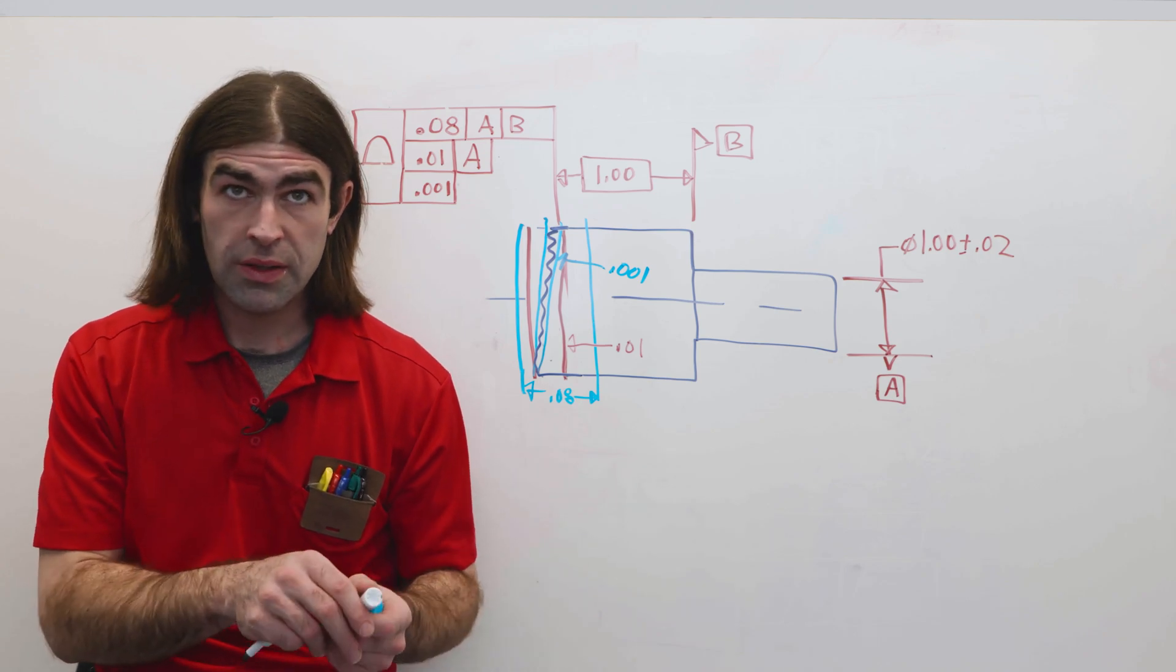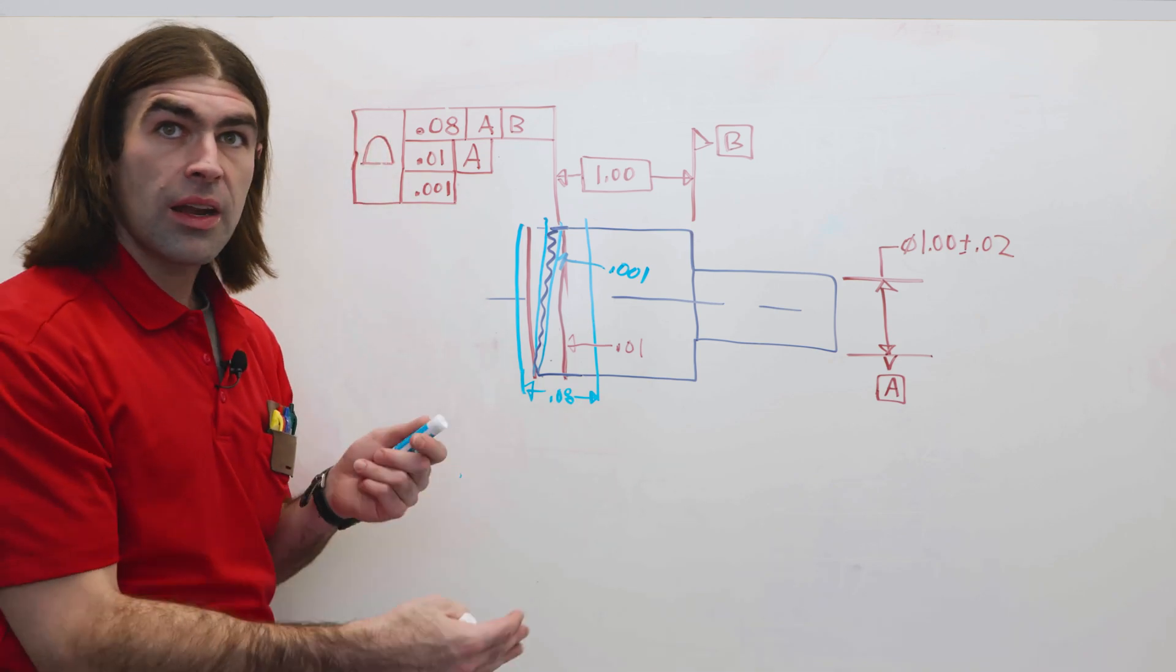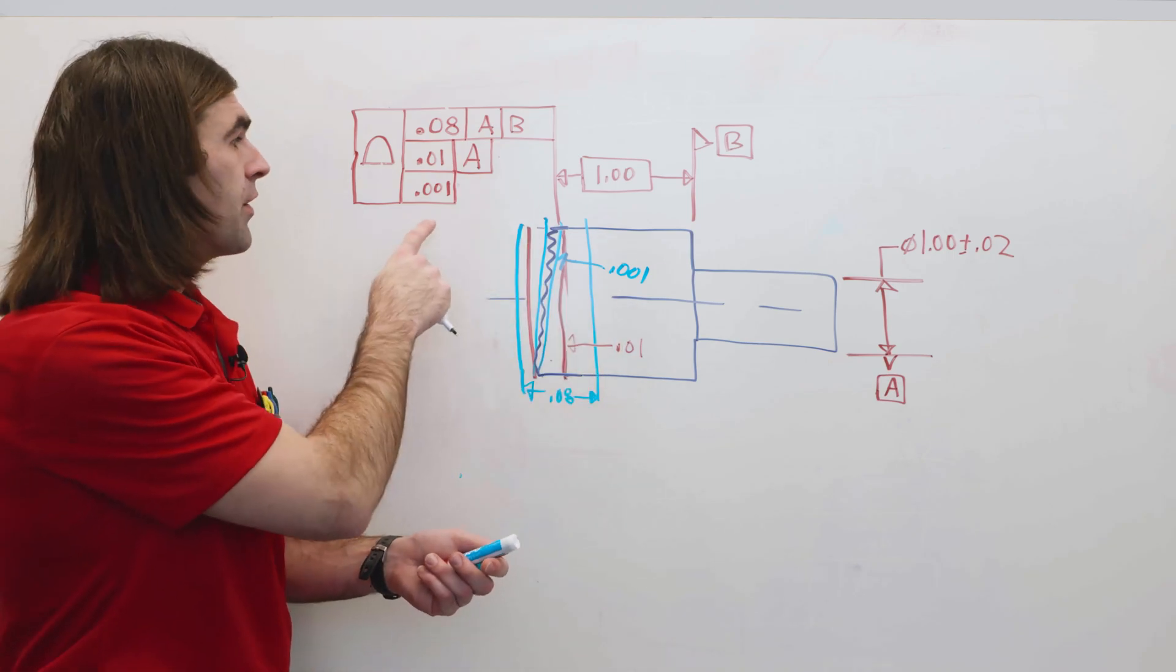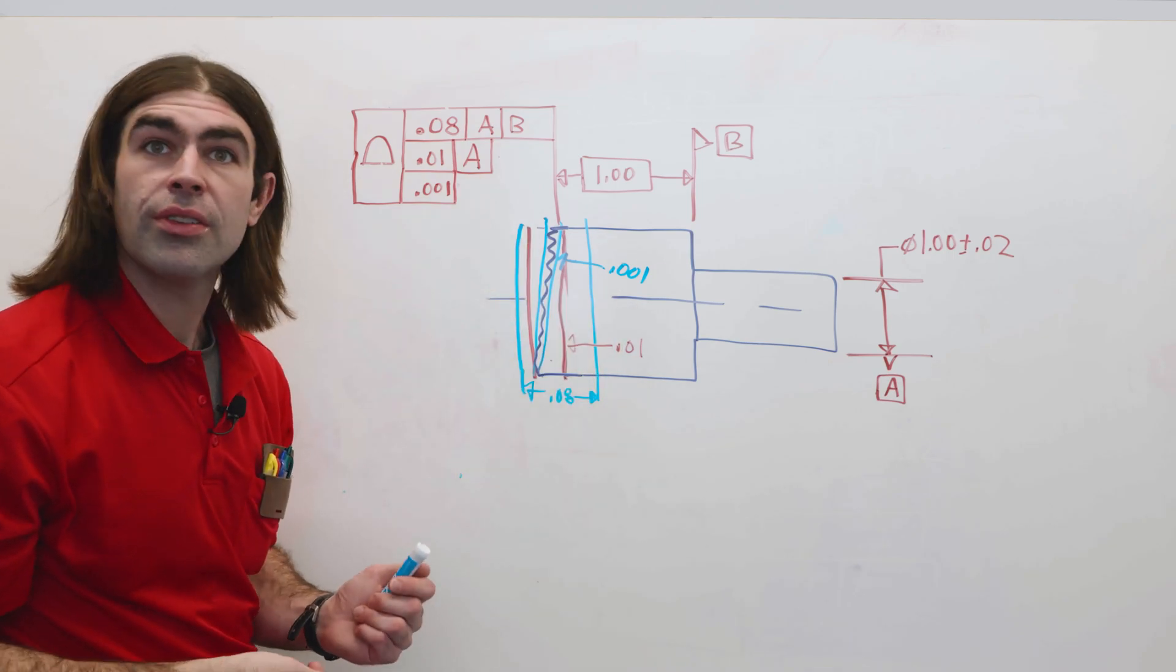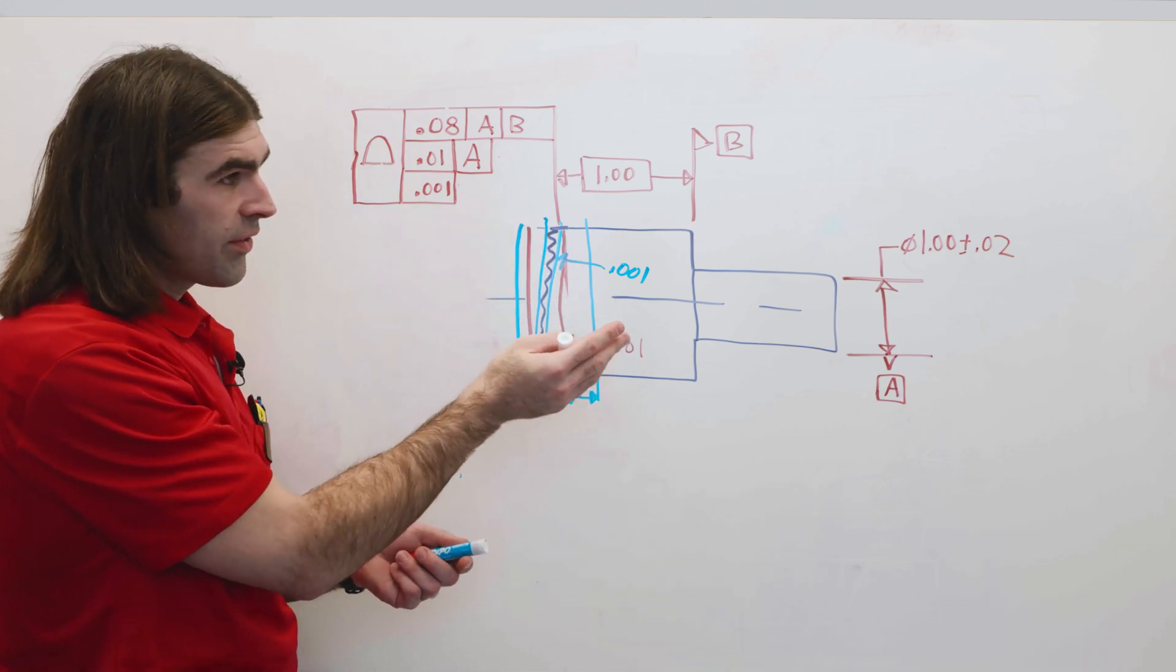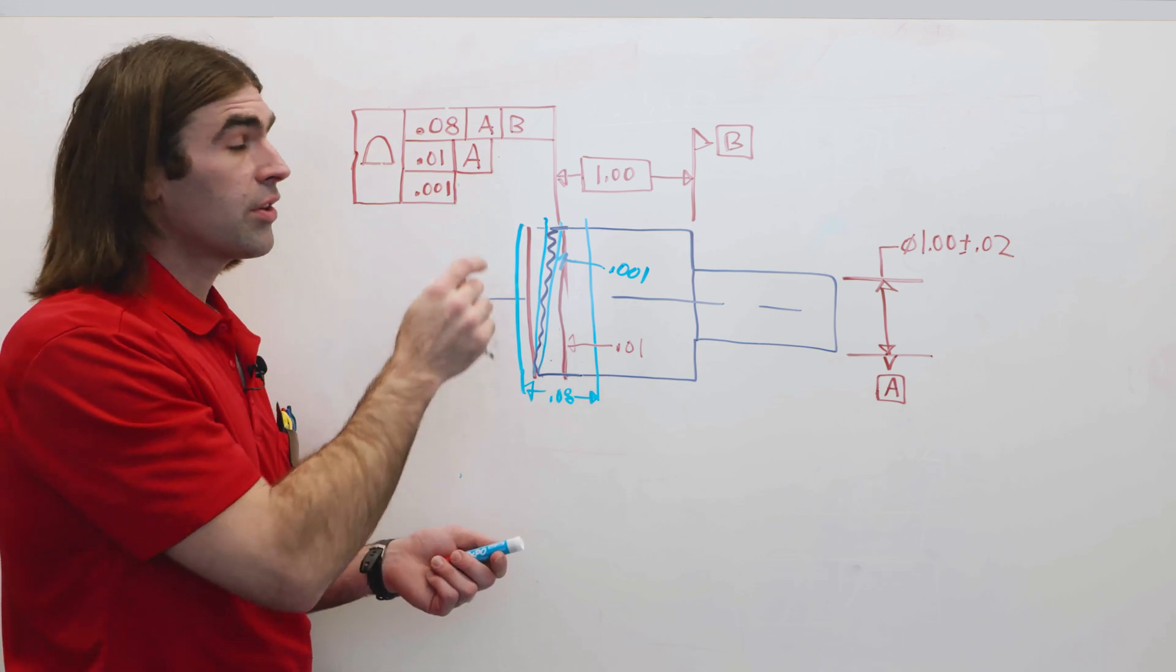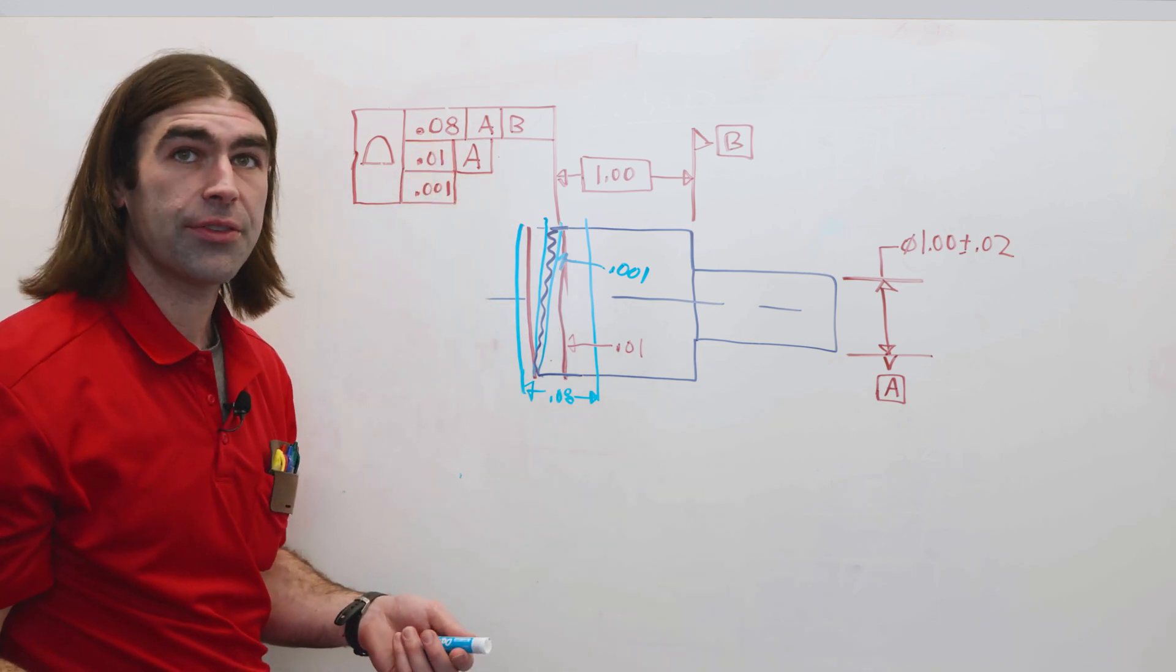So the thing with this is if you set it up to check to A and B, you got it all fixtured, and the surface is good to one thousandths, you're done. If you set it up and everything is good to 10 thousandths, you don't have to check this 80 thousandths.